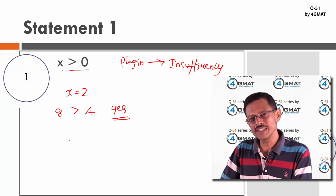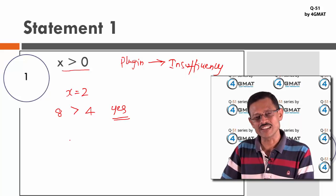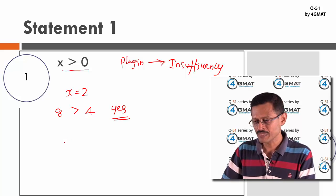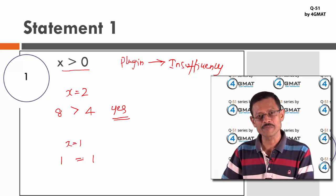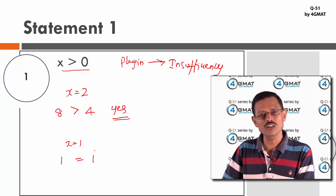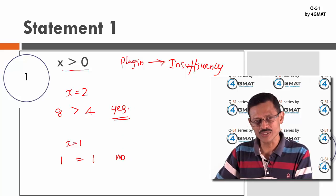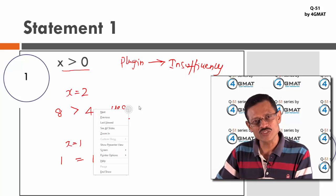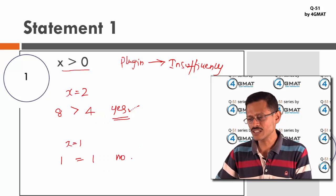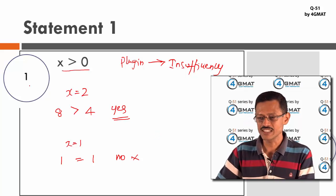When x = 1: x³ = 1 and x² = 1, so x³ = x². As we established, equality means the answer is no. So one set of values gives yes and another gives no — we don't have a uniform answer. Therefore Statement 1 is not sufficient, and we can eliminate it as a possible answer.